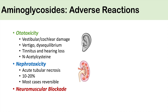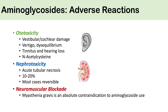Another adverse reaction is neuromuscular blockade. Any patient with a neuromuscular disorder — specifically myasthenia gravis — should not use aminoglycosides. Myasthenia gravis is an absolute contraindication to aminoglycoside use.